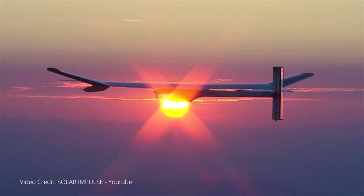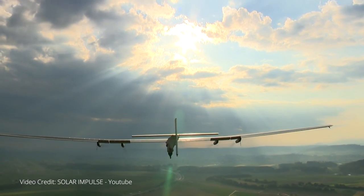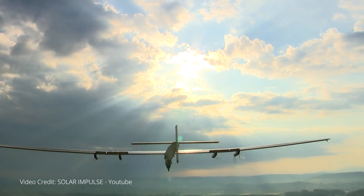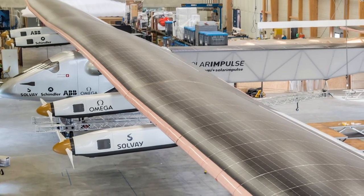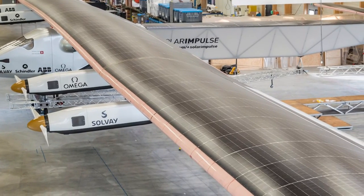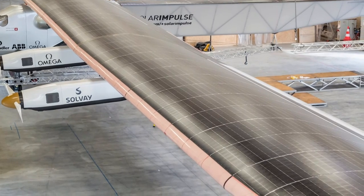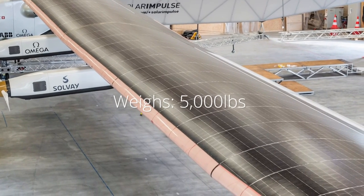Using only energy from the sun, the plane traveled for four days, 21 hours and 52 minutes to get from Japan to Hawaii. Solar Impulse 2 can be recognized by its wacky dimensions. Its wingspan is longer than a Boeing 747, but it only weighs 5,000 pounds.